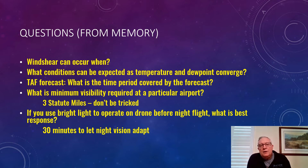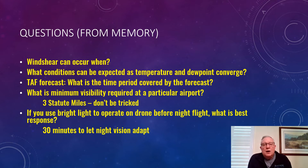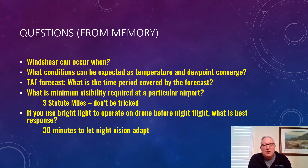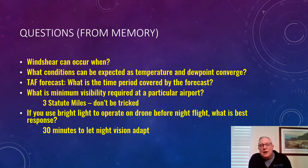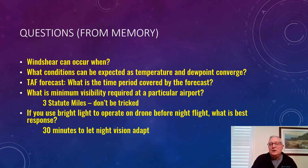Wind shear can occur any time, at any altitude, on any flight. What conditions can be expected as temperature and dew point converge? That was fog — knowing your weather was helpful there. Looking at the TAF forecast, what time period is covered? Be able to read your TAF and METAR charts. What is the minimum visibility required at a particular airport? It's always three statute miles regardless of the airport. If you use a bright light before a night flight, the best response is 30 minutes to let your eyes adjust.